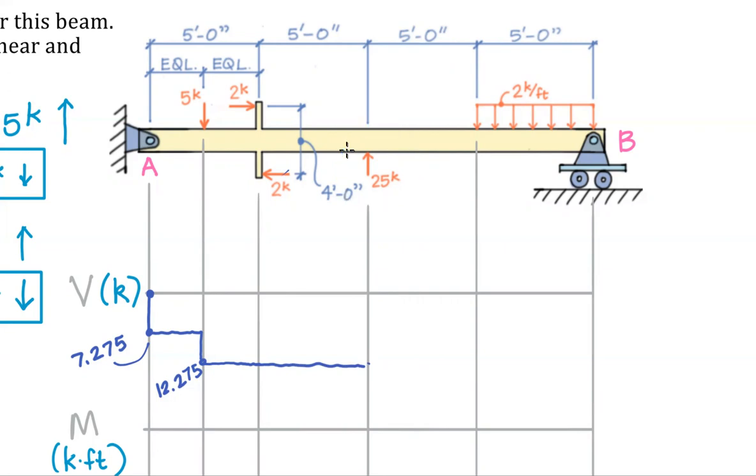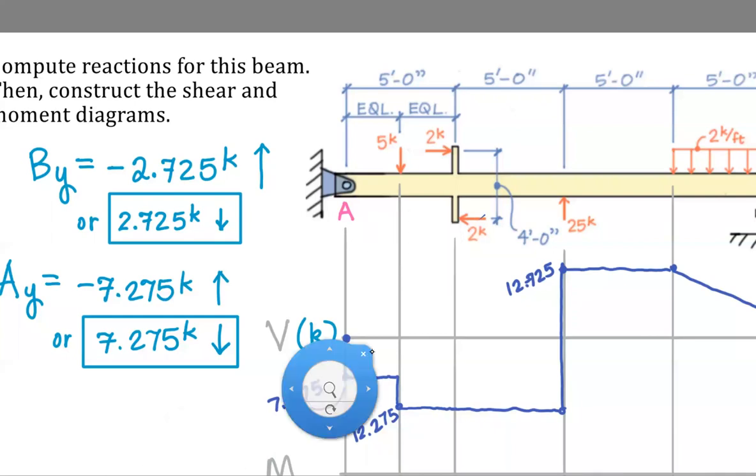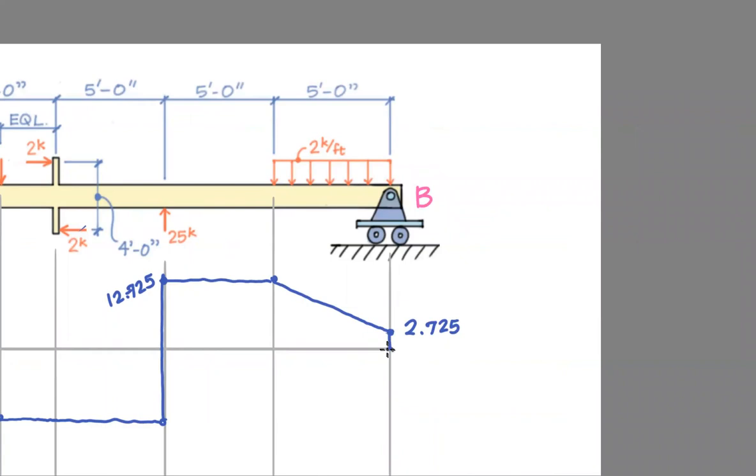Continue across here. And now we get to our big force. So that 25 kips up is going to land us at a positive value right up here. And that positive value is negative 12.275 plus 25. That is 12.725. Plateau across, nothing doing. And over the final five feet of the beam, we decrease by 10 linearly. So we're up at 12 and change. We go down 10. That puts us at 2 and change, specifically 2.725. Come down linearly. And last but not least, don't forget that reaction. So over at B, there is a hold down, downward reaction of 2.725 kips. That gets us exactly back to zero.